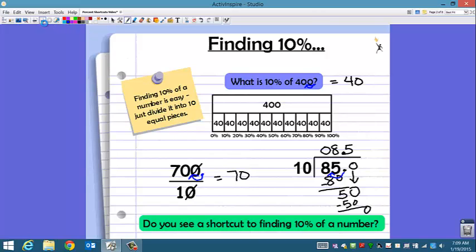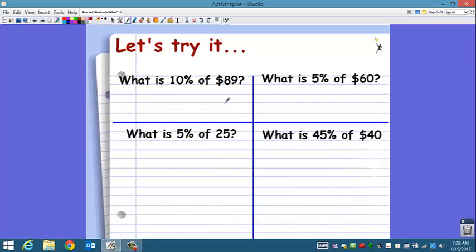So let's try some. What is 10% of $89? Here is your decimal. Move it one place to the left, and you get 8 and 9 tenths. But we are talking about money, so we need to write it in the dollars and cents format. So we need to go ahead and add a zero. So we get 8 dollars and 90 cents. 10% of 89 dollars is 8 dollars and 90 cents.